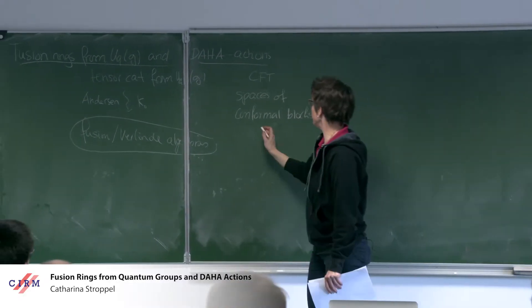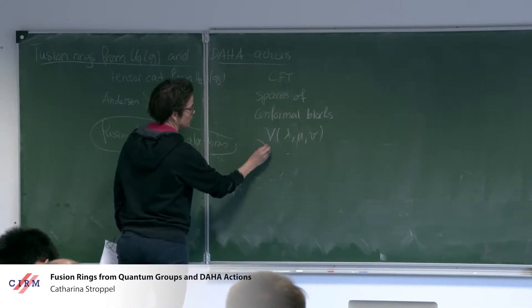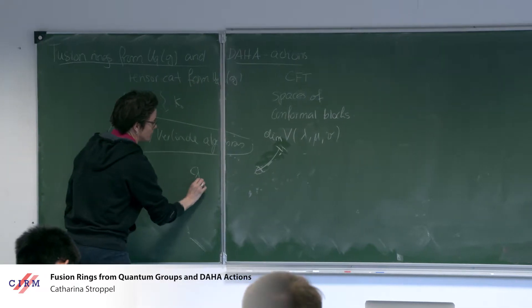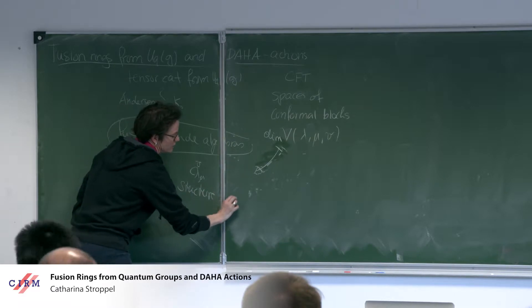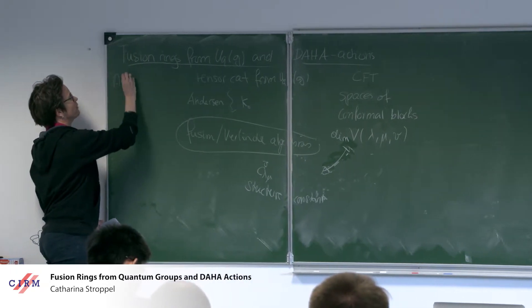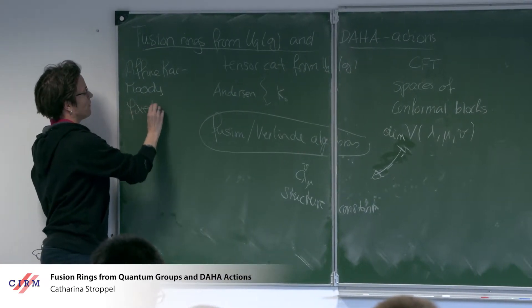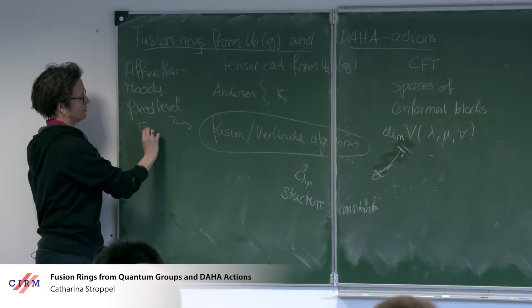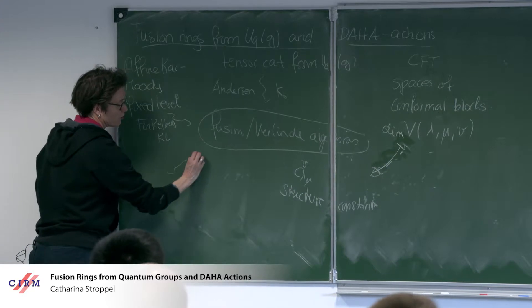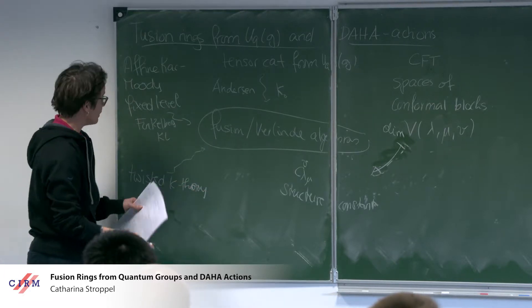Given an affine Kac-Moody Lie algebra, there are spaces depending on three weights lambda, mu, nu. Verlinde constructed an algebra by taking the dimension of these spaces and sending this to the structure constants of the algebra. Another aspect is you can also construct it from affine Kac-Moody Lie algebras by looking at representations at a fixed level. This is Finkelberg, Kasten, and Lusztig. Also from twisted K-theory — this is from the topology side — due to Freed-Hopkins-Teleman.